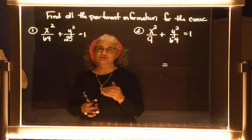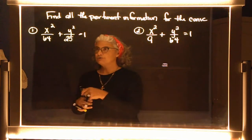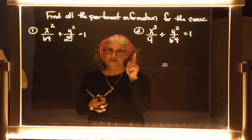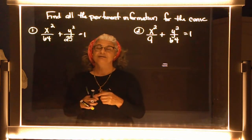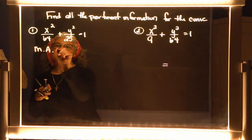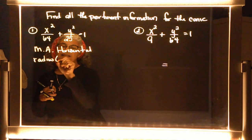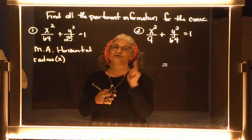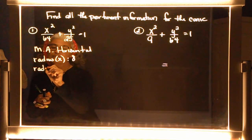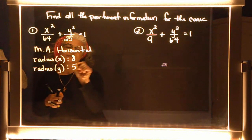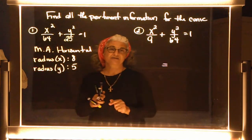Is the major axis horizontal or vertical? The denominators represent the radii. The one under x is larger, so the major axis is horizontal. The radius in the x direction is 8 (square root of 64), and the radius in the y direction is 5 (square root of 25). The major axis is horizontal because the radius in the x direction is larger.